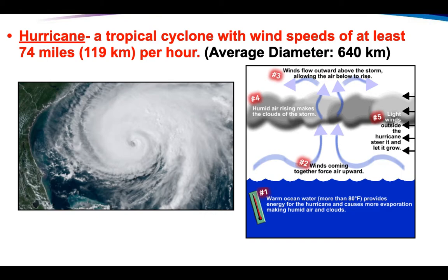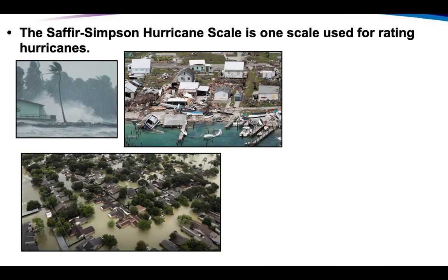Why don't we have hurricanes in Minnesota? Because we don't have warm ocean water — that is what you need. Hurricanes need warm ocean water, more than 80 degrees, to get the energy going. The winds come together, forcing air upwards. Humid air makes the clouds of the storm, and then winds outside the hurricane steer it and let it grow. When these are over water they continue to grow, but as soon as they reach land, they no longer have that warm ocean water fueling them.